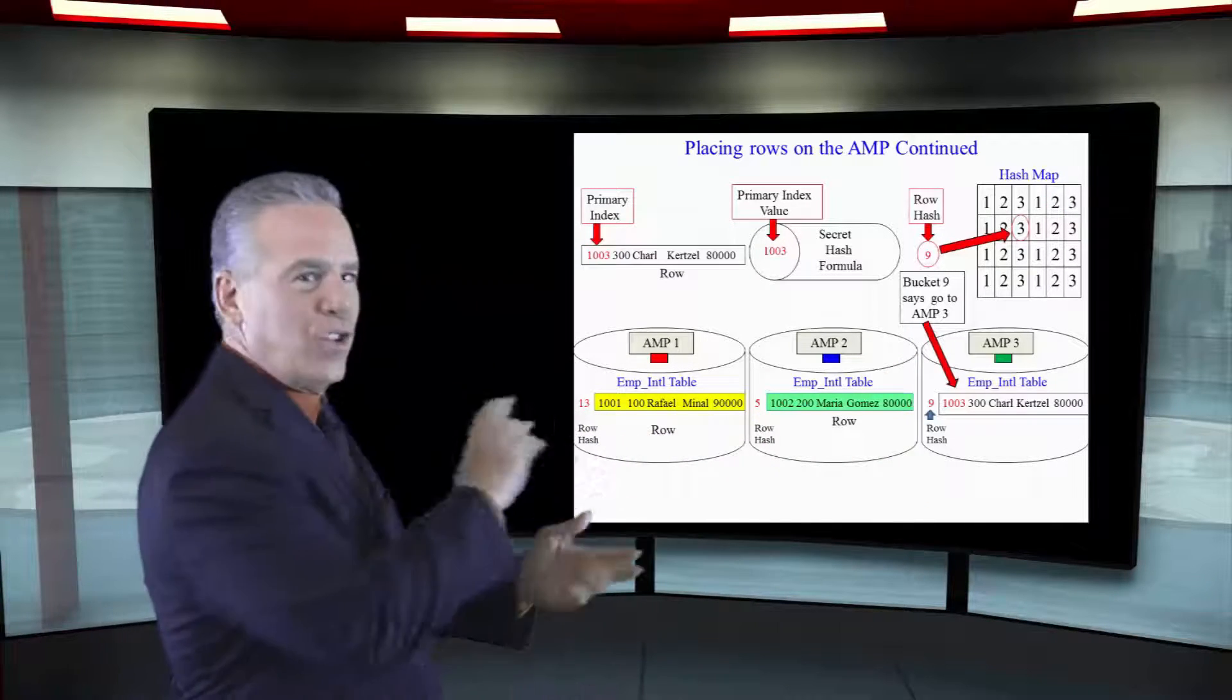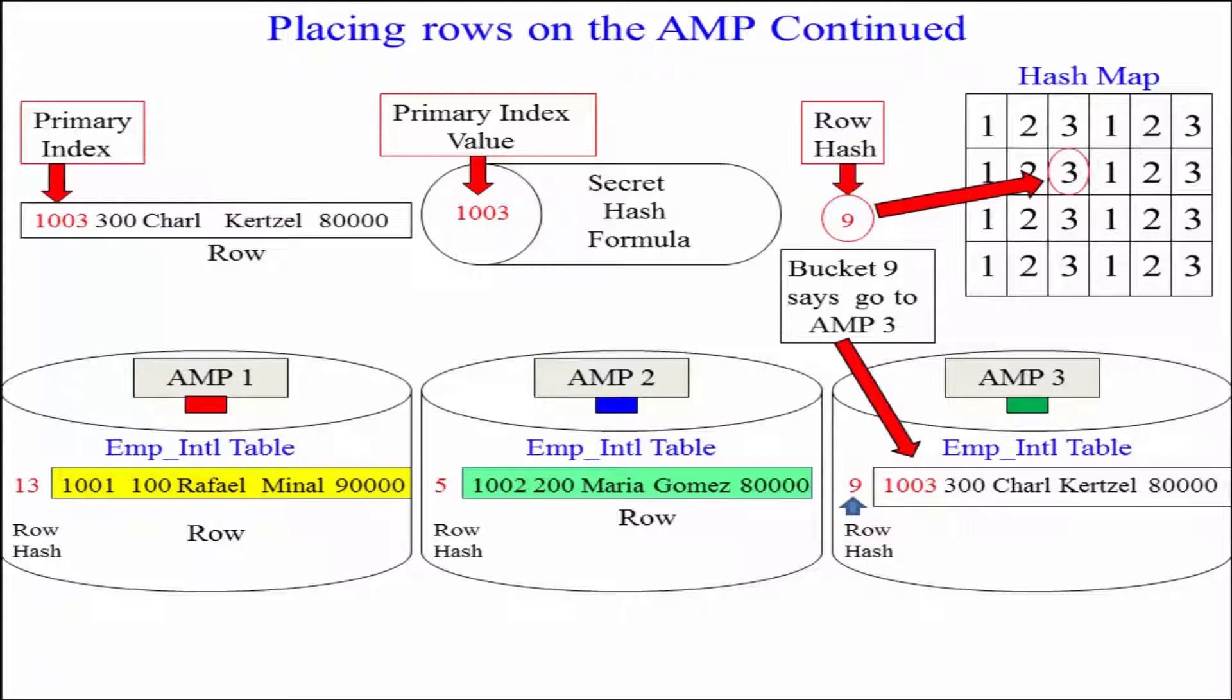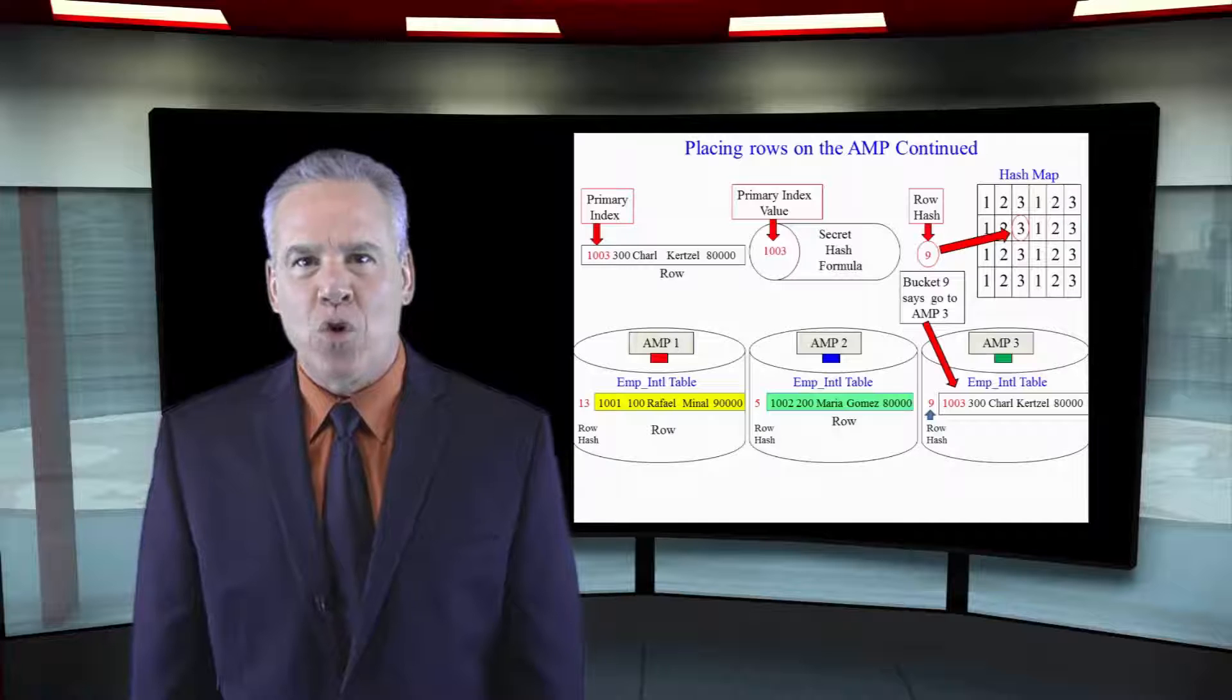Speed clock it. Hash 1003. It's a 9. Count over 9 buckets. There you go. Take it to amp 3. Take the 9 with you. We're laying this data out quickly.